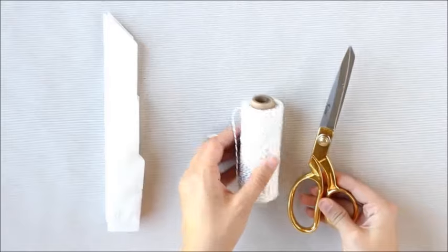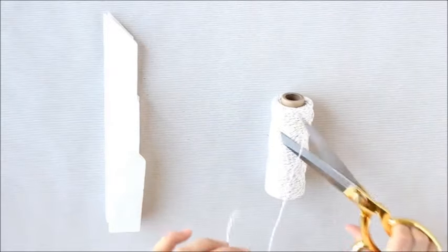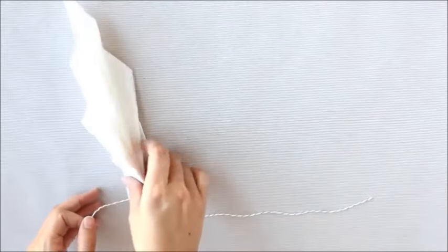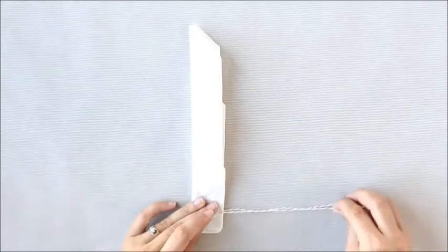Next, cut a piece of twine about 15 inches long. Tie the twine into a bow at the bottom of your napkin.